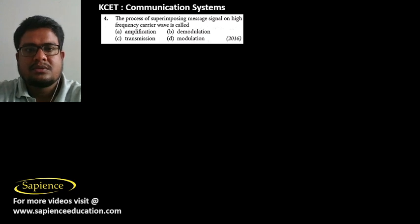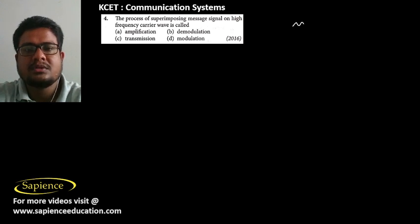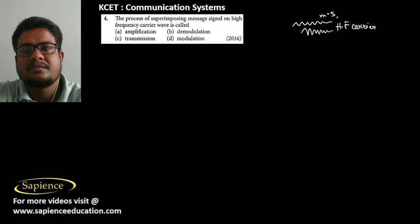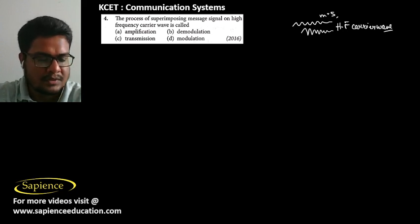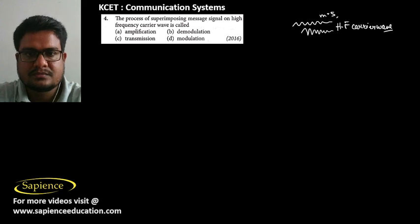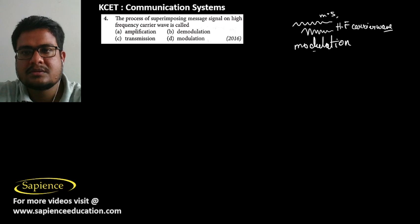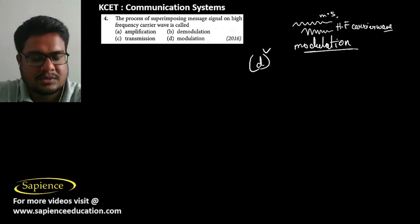In question number 4, the process of superimposing a message signal on a high-frequency carrier wave is called modulation. Option D is the correct answer.